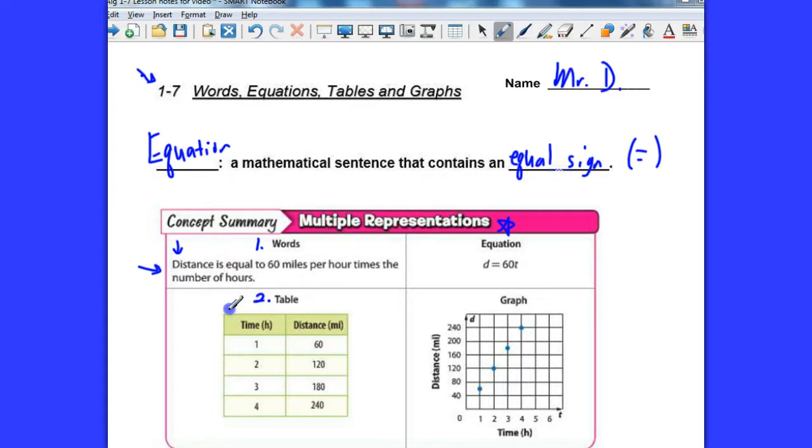A second way that we can show information is a table. Now, typically, in a table, that first column represents the x values and the second column represents the y values, even though we will often change the variable to represent the situation. So time here is hours. That's what the time represents.